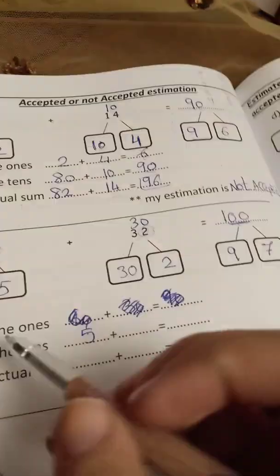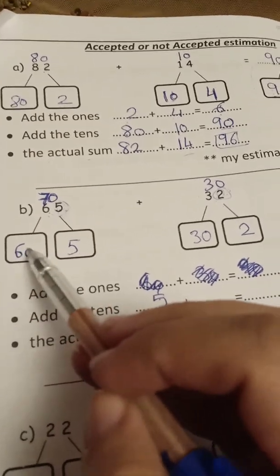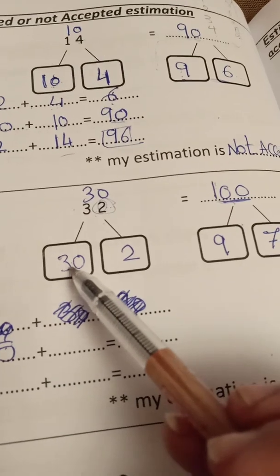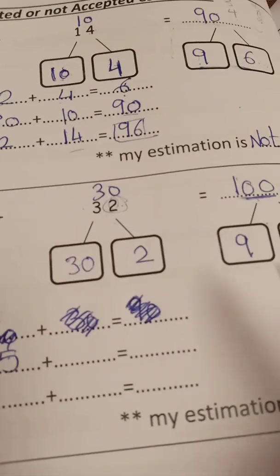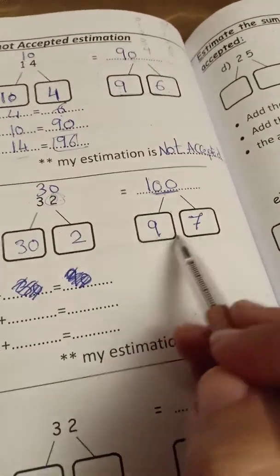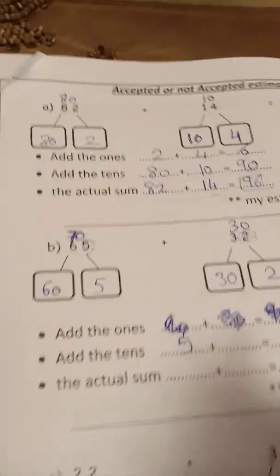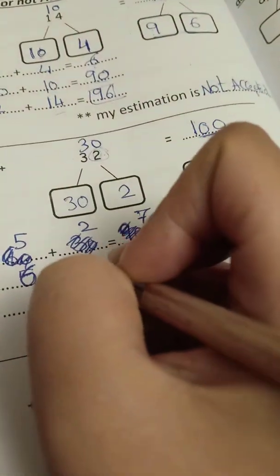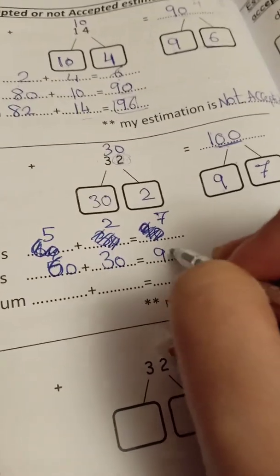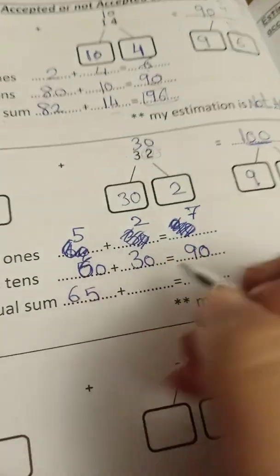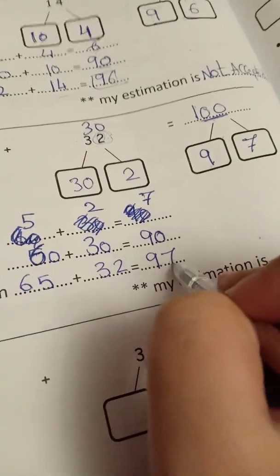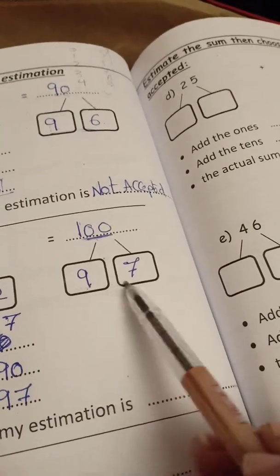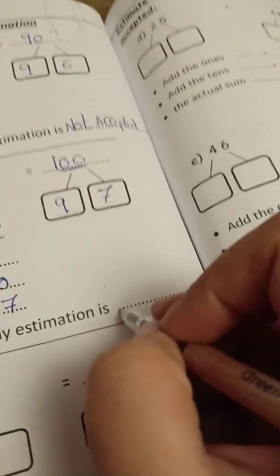We have 60 and 5 in the ones, and 30 and 2 in the ones. For the actual sum of 65 plus 32: add the ones — 5 plus 2 equals 7; add the tens — 60 plus 30 equals 90. The actual sum is 97. My estimation of 100 is very close to 97, so it is accepted.